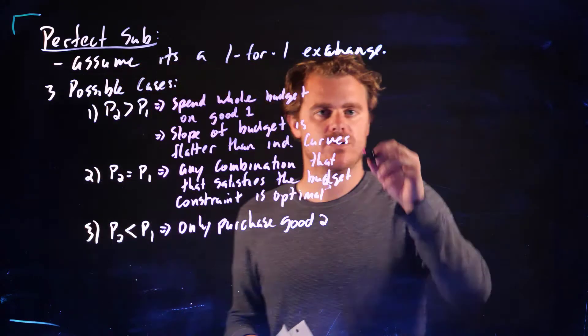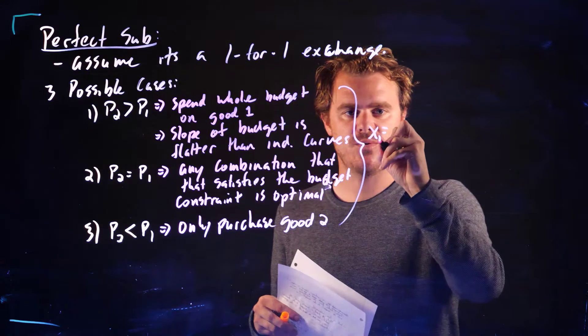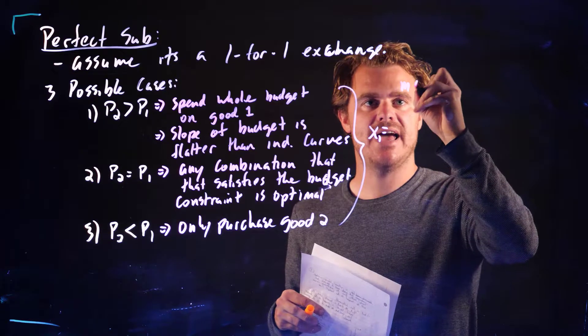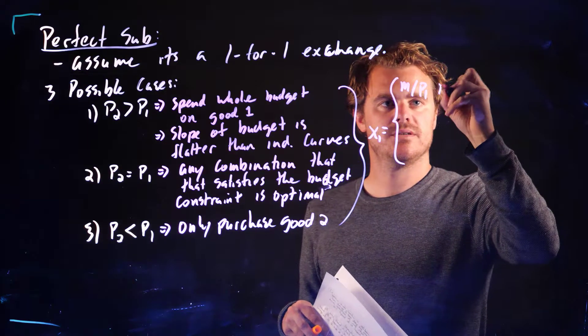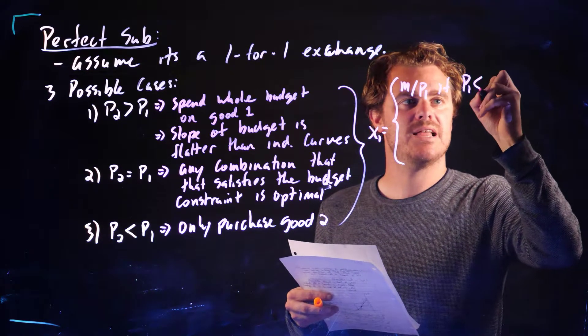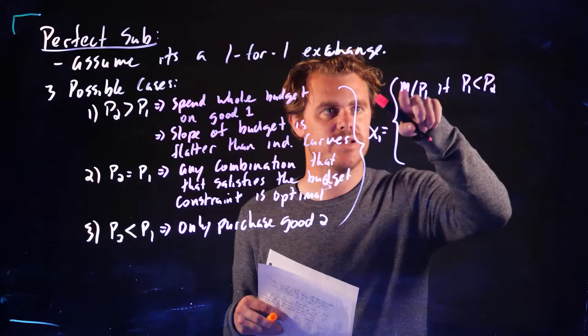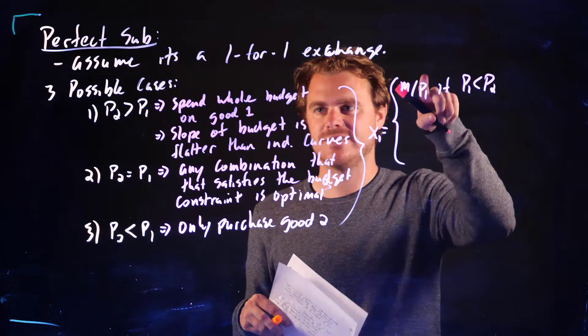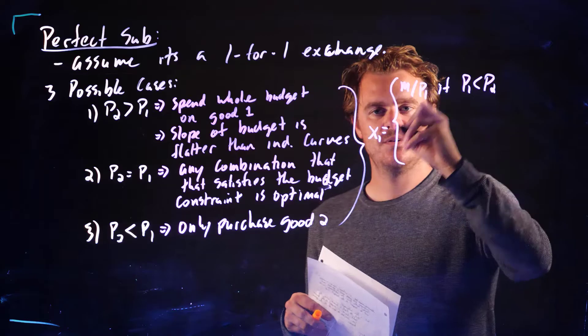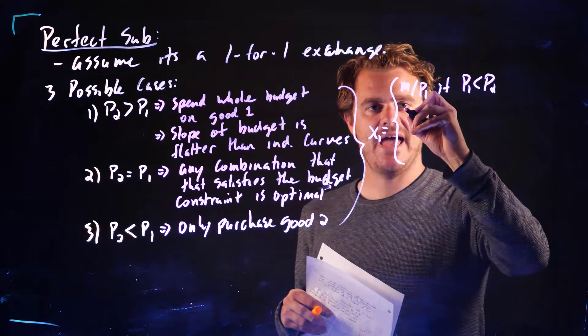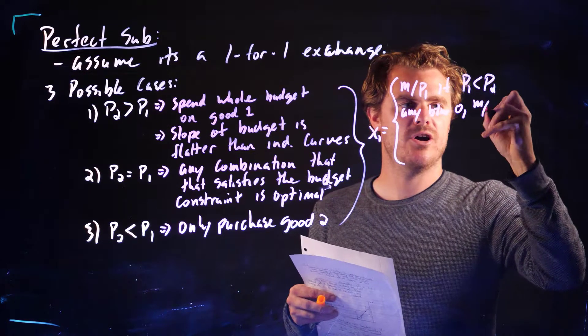And so if we want to write out what this means mathematically, our demand for X1 is M over P1 if P1 is less than P2. We're spending all of our money. Remember M is our budget, P1 is the price of good 1. This is how much X1 we can afford if we spend our entire budget.